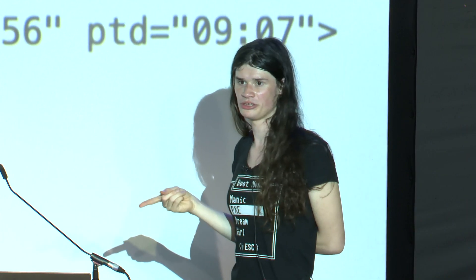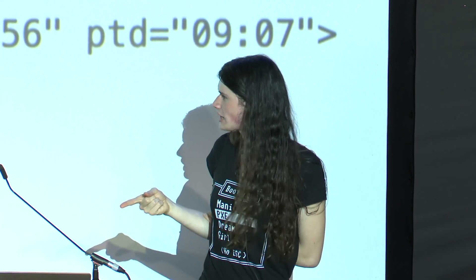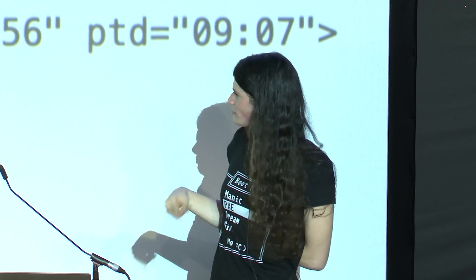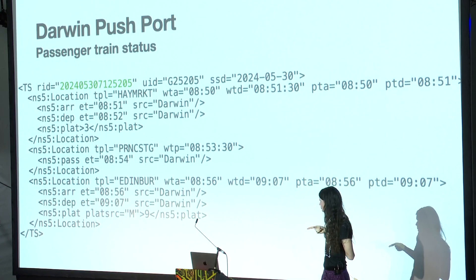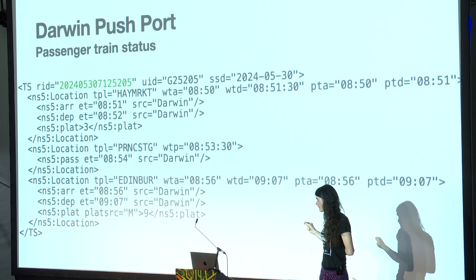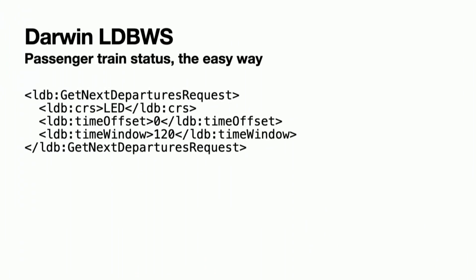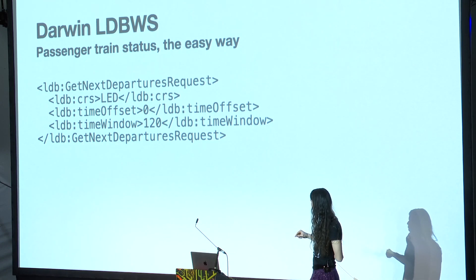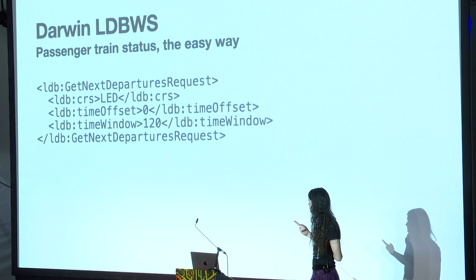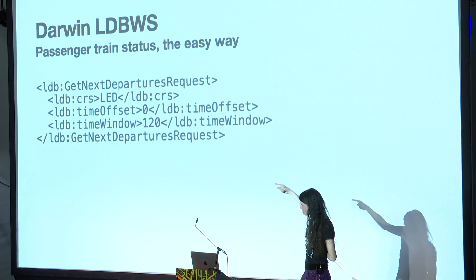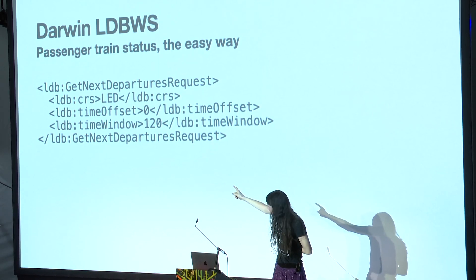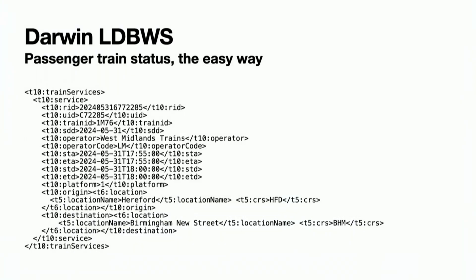Darwin is not bad at all. You can subscribe to the feed and keep track of the status of every train on the network. It is a lot of work if you don't want to track every train in the country at a given time. In that case, there's something called the Darwin Live Departure Board Web Service — a very nice, straightforward SOAP API, which is this old 2000s REST precursor. It's a little scary but really not bad. You post XML to an HTTP endpoint and ask it, for instance, to get the next departures from Ledbury in the next 120 minutes, and it comes back with a list of trains. So if you just want to get the status of a particular train or trains leaving from one station, this can be a very quick, straightforward way to do it.